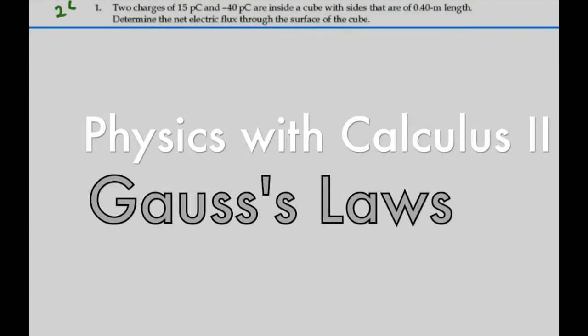Here's problem number 24.1. Two charges, 15 picocoulombs and minus 40 picocoulombs, are inside a cube with sides that are 0.4 meters length. Determine the net electric flux through the surface of the cube.